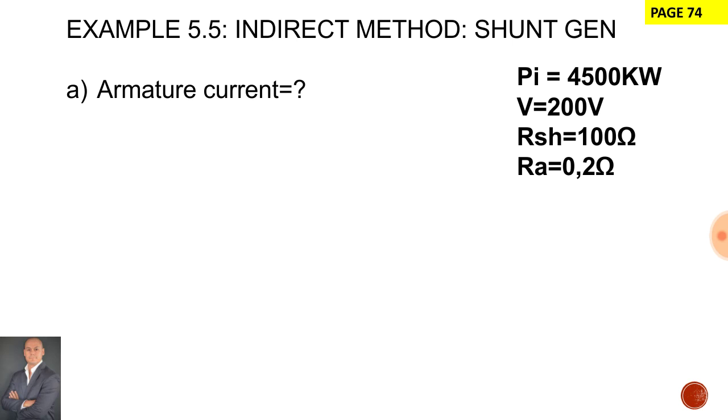The first thing to do is calculate the armature current. Now because it's a generator, we say IA is equal to IL plus I shunt.